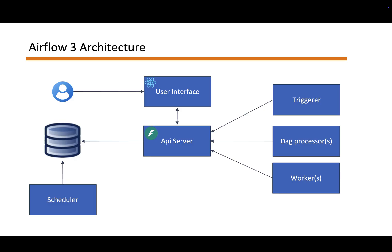Looking at the right side, we have three different components. One is the triggerer, through which you can run tasks on demand rather than on a scheduled basis. We also have a separate standalone DAG processor, so DAG parsing is now isolated from scheduling for better performance and observability. And then we have the workers — all three of these components talk directly to the API server rather than to the database directly.